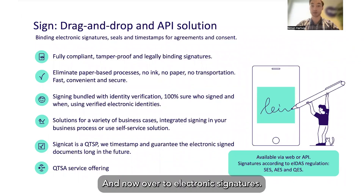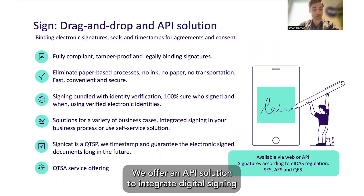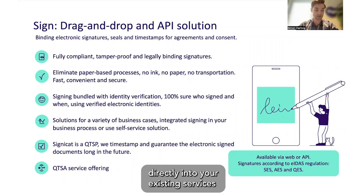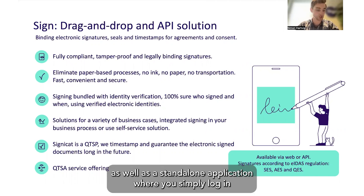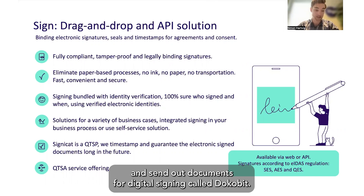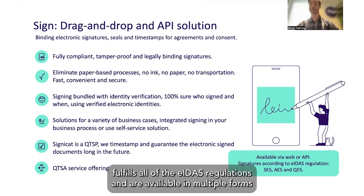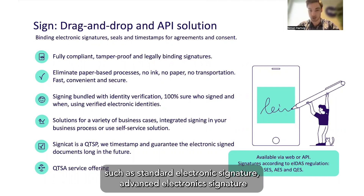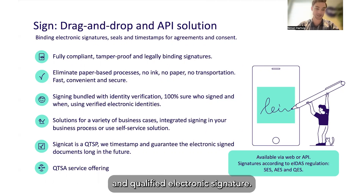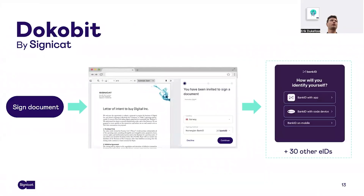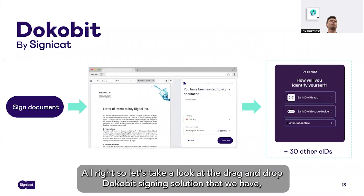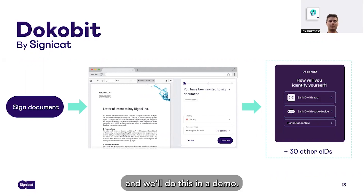And now over to electronic signatures. We offer an API solution to integrate digital signing directly into your existing services, as well as a standalone application where you simply log in and send out documents for digital signing called Docubit. All signatures made via our APIs or Docubit fulfill all of the eIDAS regulations and are available in multiple forms such as standard electronic signature, advanced electronic signature, and qualified electronic signature. So let's take a look at the drag and drop Docubit signing solution in a demo.